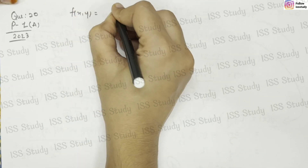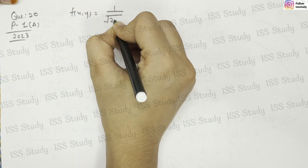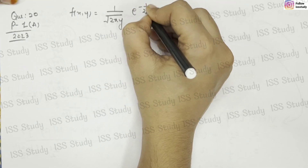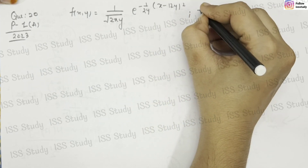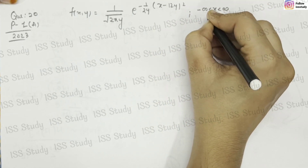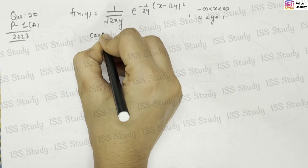Hello everyone, hope you all are doing great. In this class we are going to discuss question number 20 of paper number 1, set A of the year 2023. In this question you are given a joint PDF f(x,y) which is 1 upon root(2π y) times e to the power minus 1/(2y) times (x minus 12y) squared. The range of x is from minus infinity to plus infinity, the range of y is from 0 to 1, and the question is asking you to find the value of covariance of x and y.